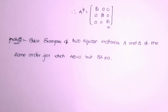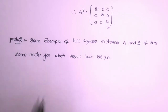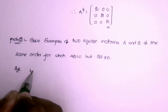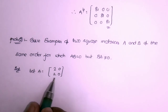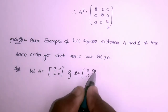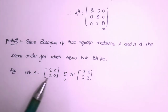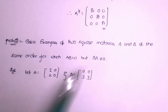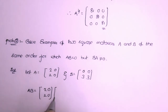Second question: give examples of two square matrices A and B of the same order for which AB = 0 but BA ≠ 0. We want two square matrices satisfying these conditions. Let A = [[2,2],[0,0]], where the second column is zero, and B = [[0,0],[3,3]], where the first row is zero. Now computing AB: A = [[2,2],[0,0]] times B = [[0,0],[3,3]].